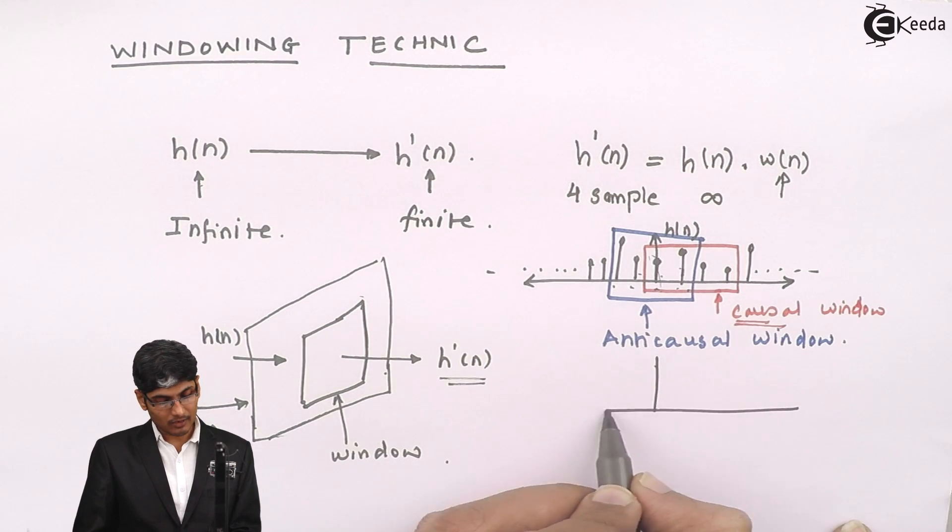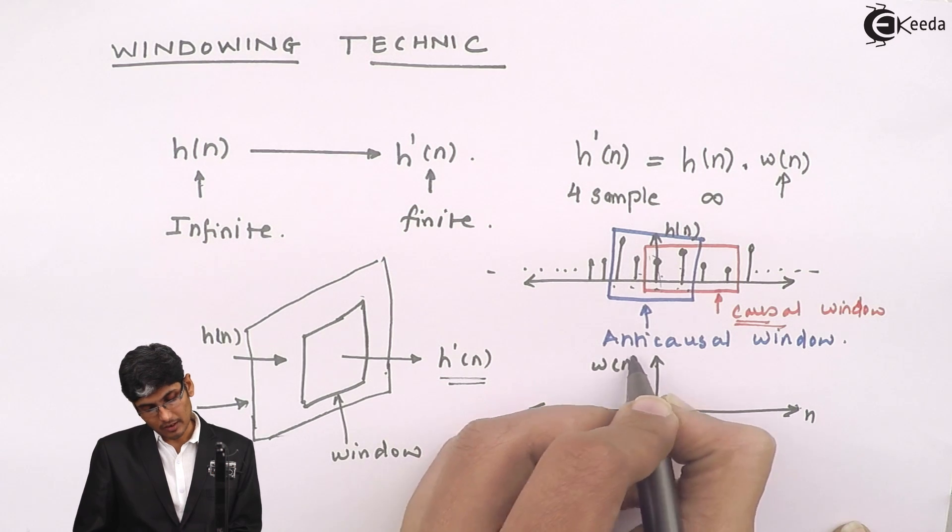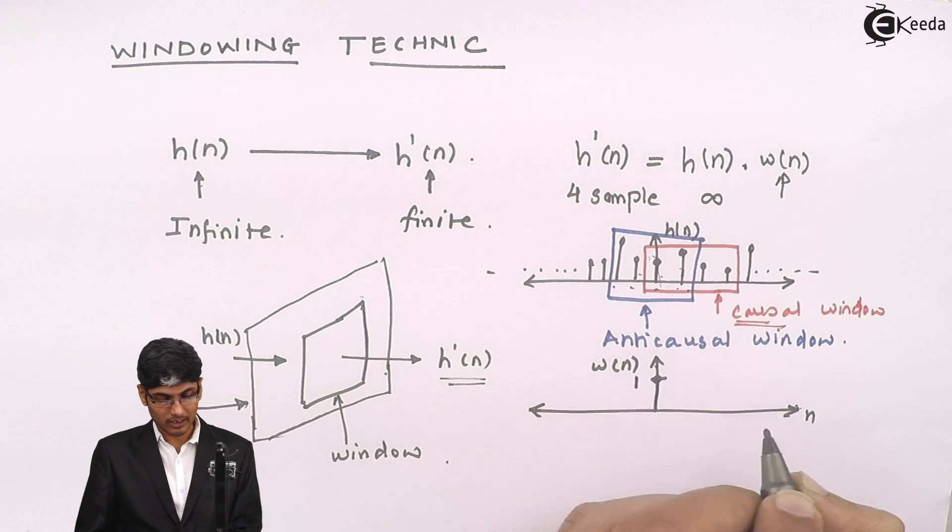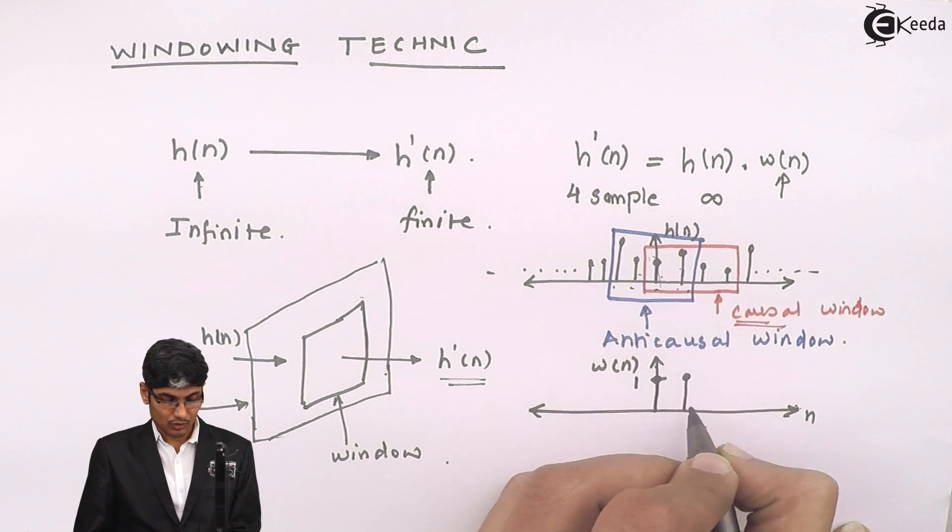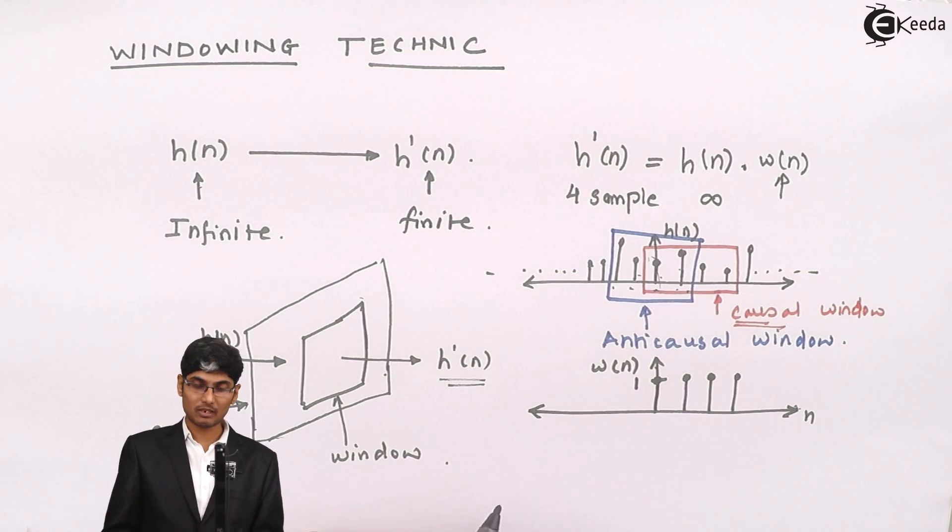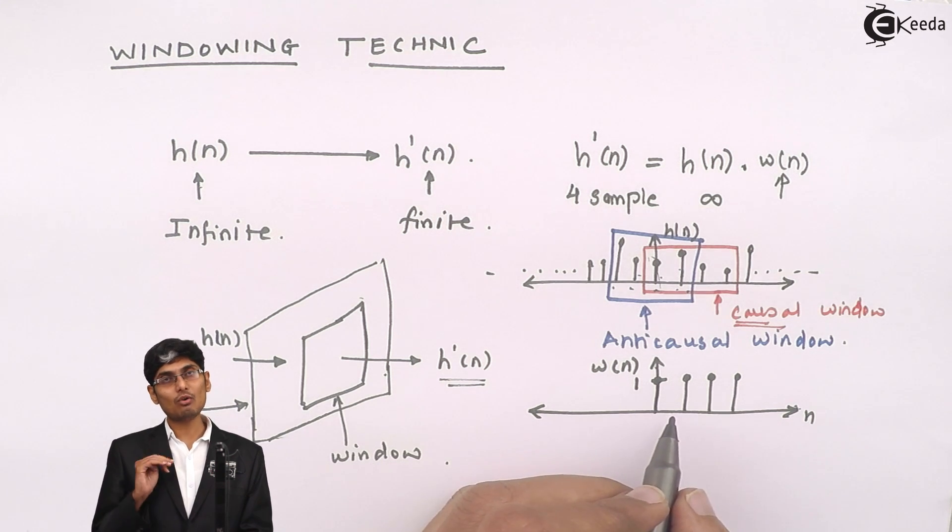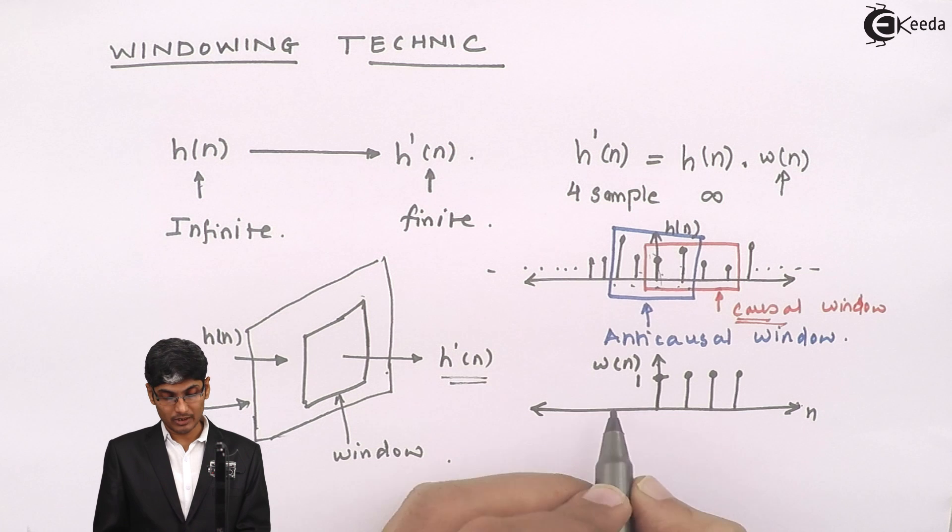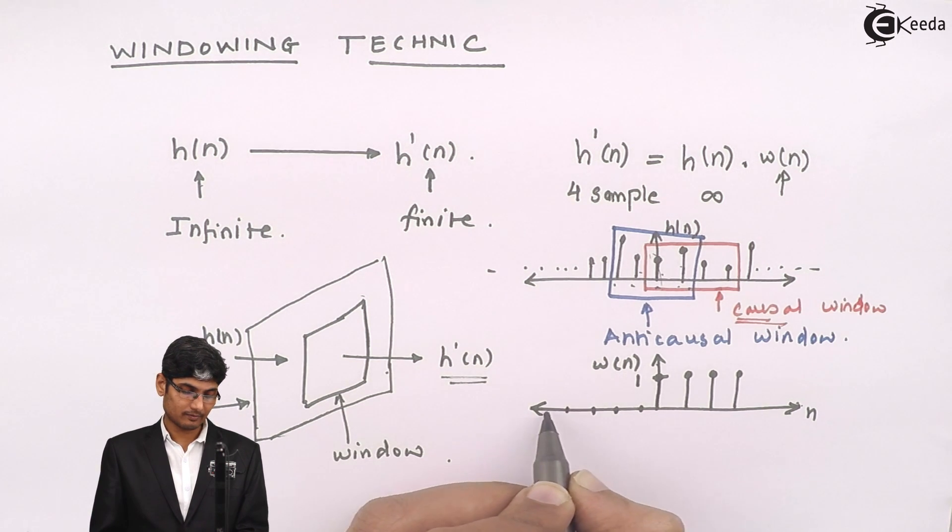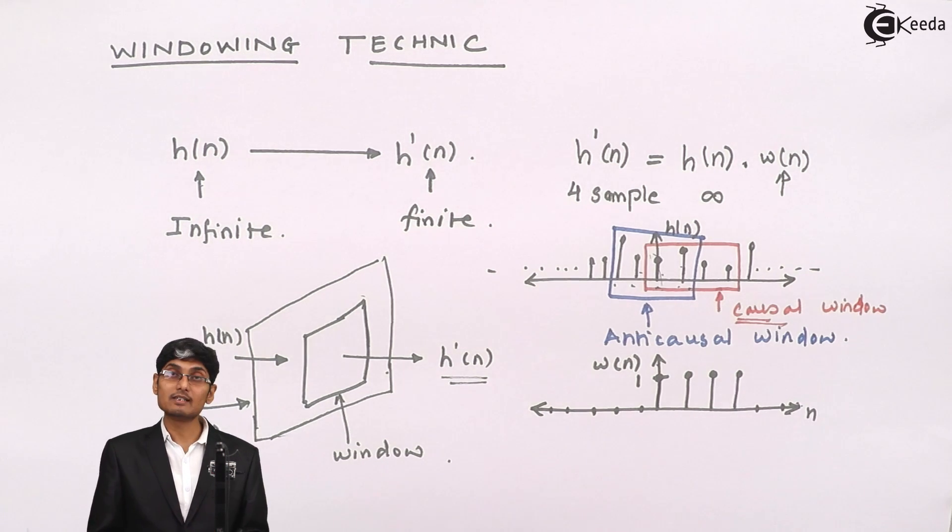I will make my function w of n such that it will have a height of unity, 1, 2, 3 and 4 because I want only 4 samples in my final answer. In my window function, I will give only 4 samples of height unity and rest I will make 0 for infinite. The window is also infinite, but all the other samples are 0.